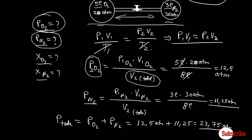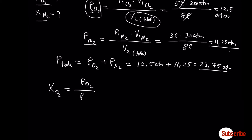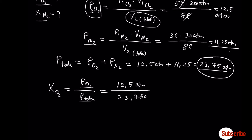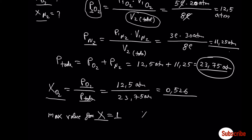To find the mole fraction, we take the pressure of oxygen divided by the total pressure, which we already found. The mole fraction for oxygen is 0.526. For the nitrogen mole fraction, we have two options: calculate it directly as we did for oxygen, or use the fact that the maximum value of mole fraction is 1 — so the mole fraction for nitrogen equals 1 minus the mole fraction for oxygen. Mole fraction has no units; it is simply a value with a maximum of 1.